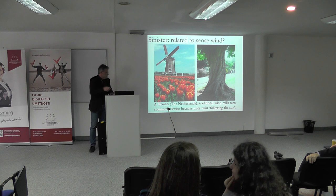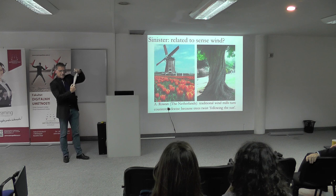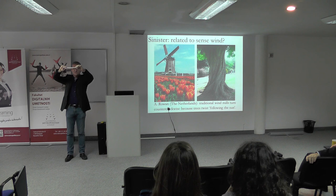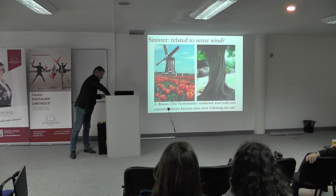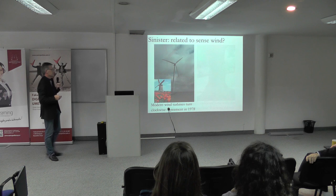A tree, when it grows, it goes with the sun — it follows the sun a little bit. So when you put it horizontal, the windmills turn this way. The best way to turn is like this; otherwise it would break up. So they will always make a windmill turn in this direction. But modern wind turbines turn the other way — since around 1978-1980, they all turn in the opposite direction of traditional windmills, because of some agreement between producers.